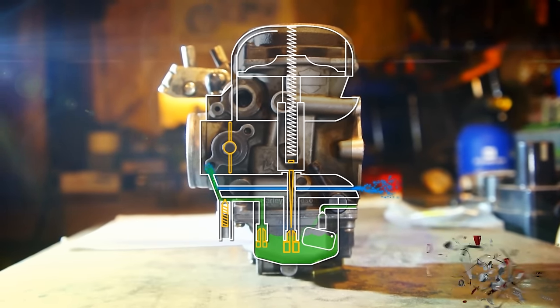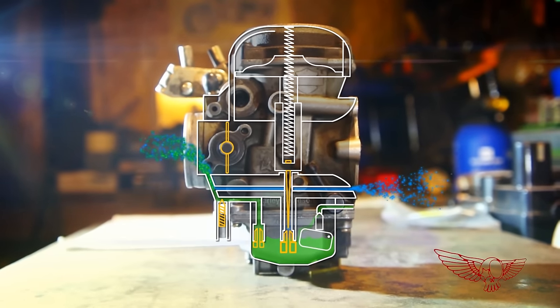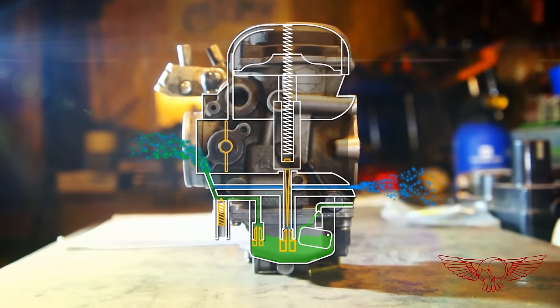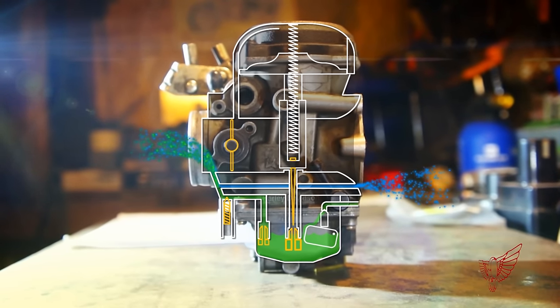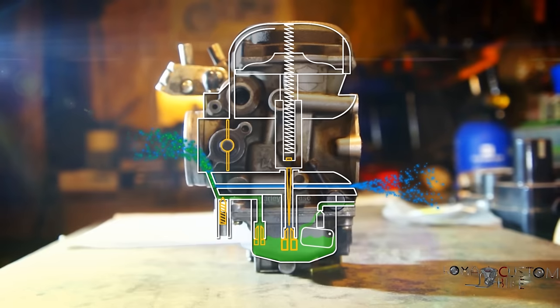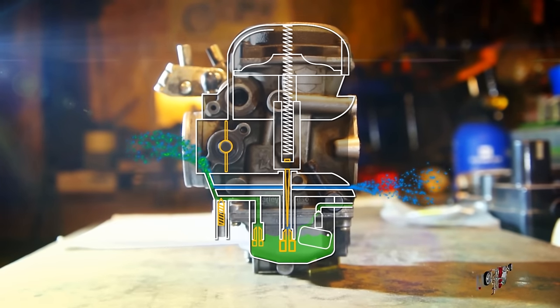Now, how does it work? In idle condition, the fuel is sucked out of the fuel bowl through the pilot jet and is mixed with the air before going into the cylinder. The whole process is powered by the low pressure vacuum that the piston creates inside the cylinder.